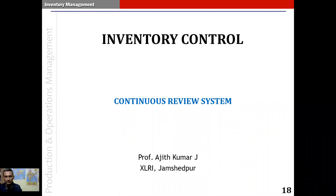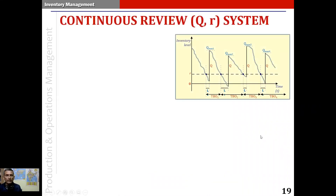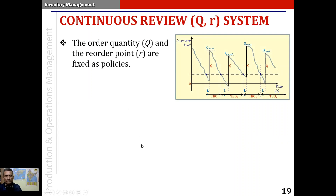In the continuous review system, also known as the Q comma R system, the order quantity Q and the reorder point R are fixed as policies. If you examine this graph closely, we have the inventory position on the y-axis. You can see the inventory position coming down gradually, and it's not a straight line because the demand rate is not assumed to be constant.